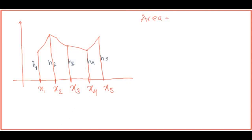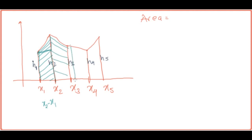Given points x1, x2, x3, x4, x5 with pillars of height h1, h2, h3, h4, h5 respectively, the total area of the figure is the sum of four trapeziums. Each trapezium has two parallel sides (the pillar heights at adjacent points) and a width equal to the distance between those points — for example, x2 minus x1.